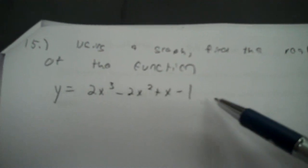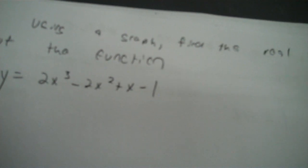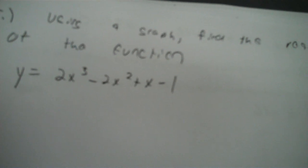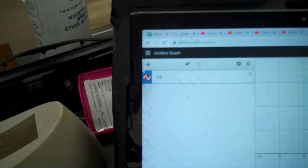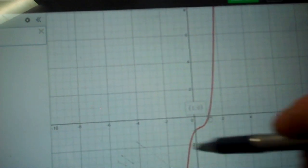Using a graph, find the real zero of the function. Real zero is where it crosses the X-axis — it must do it one time. It's got three roots, but two must be imaginary — complex roots. Punch in 2X cubed minus 2X squared plus X minus 1. It crosses the X-axis once; that's why there's one real zero. X equals 1, Y equals 0, so 1 is the real zero. The way to find where Y is zero is to look along the X-axis.